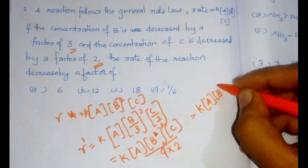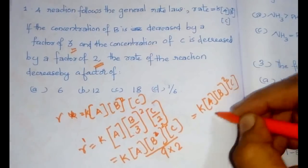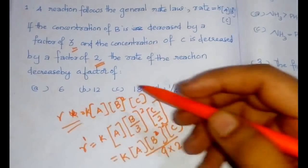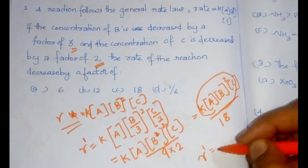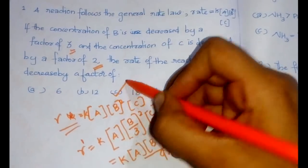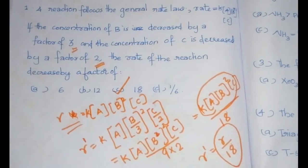Therefore the answer would be K × [A] × [B]² × [C] divided by 18. This is R, so R' = R/18. It is decreased by a factor of 18. Option C would be the right answer.